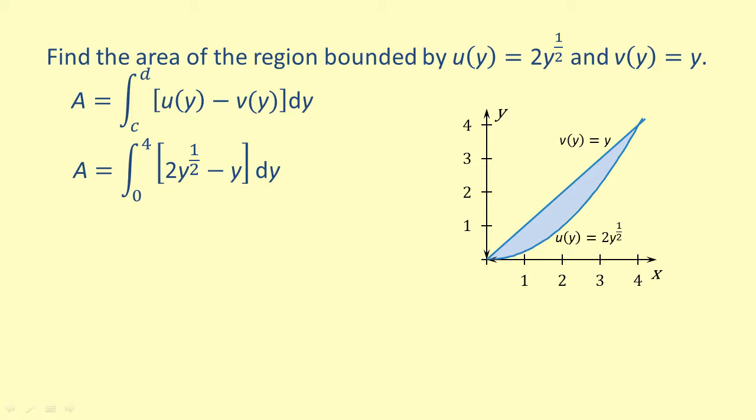The integrand is fully simplified, so let's integrate. We get 4y to the three halves over 3 minus y squared over 2, evaluated from 0 to 4.